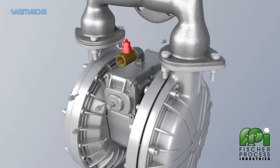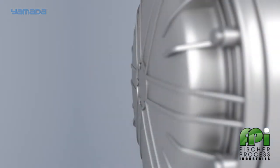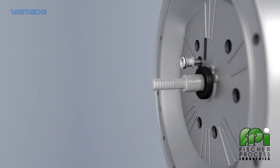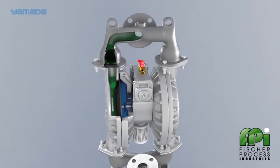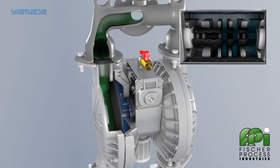What separates Yamada from the rest of the pack is our air valve technology. Yamada uses a completely non-lubricated main air valve and independent pilot mechanisms to control the air logic. As compressed air enters the pump, it is directed via the main air valve to one side or the other depending upon the starting position of the c-spool.